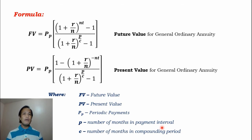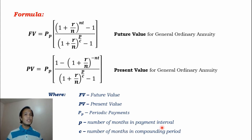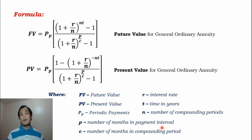The C is the number of months in the compounding period. For example, if the compounding period is annual — meaning once a year — there are 12 months. If compounded quarterly, the number of months in the compounding period is three months. R is the interest rate, T is time in years, and N is the number of compounding periods.